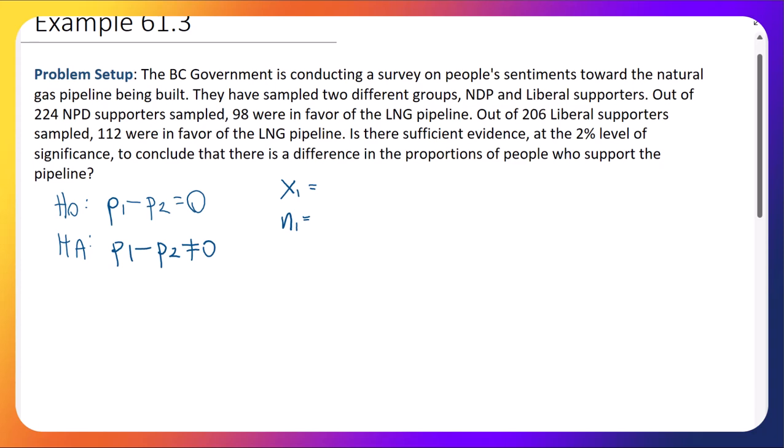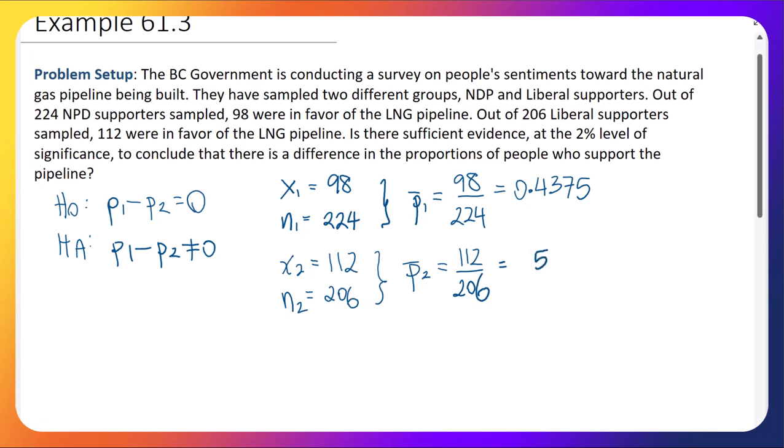Let's just do them in the order that they were listed. So NDPs, we're going to call them sample 1, and they're at 98 out of 224, giving a sample proportion result of 98 out of 224, which gives us 43.75%, or 0.4375. Our second proportion is going to be the Liberal supporters, and it's 112 out of 206 of them who are in favor. So that puts our second sample proportion at 55.8%, or in decimal form, 0.5583.